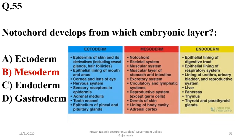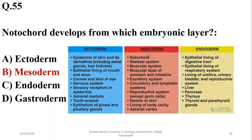All those structures develop from mesoderm. In endodermal structures: inner lining of digestive tract, epithelial lining of respiratory system, lining of urethra, liver, pancreas, thymus, thyroid, and parathyroid gland. Ectodermal structures include skin, nervous system, cornea, lens of the eye, sensory receptors in the epidermis, adrenal medulla, tooth enamel, and epithelium of pineal and pituitary gland. So the right option is B — notochord develops from the mesoderm.